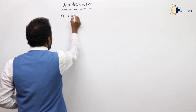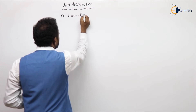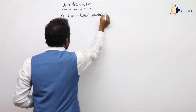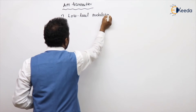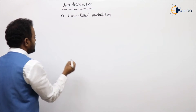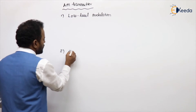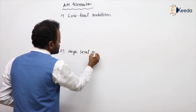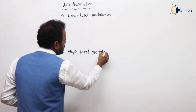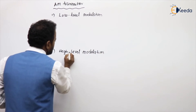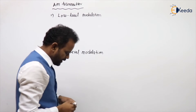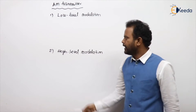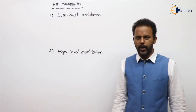The first type is low level modulation, and the second one is high level modulation. The name itself tells you — low level means low power handling, and high level means high power handling.